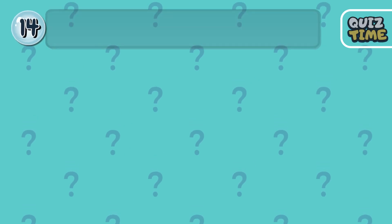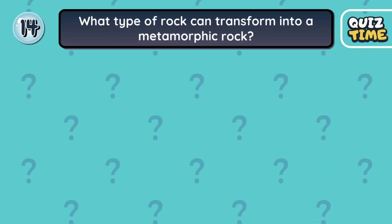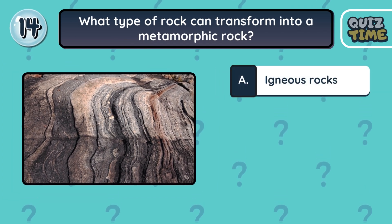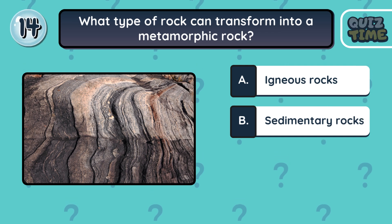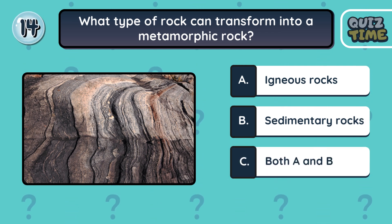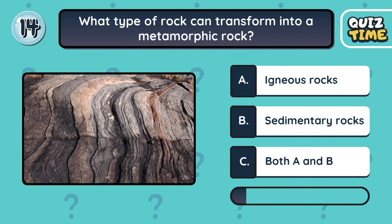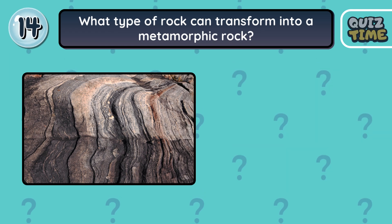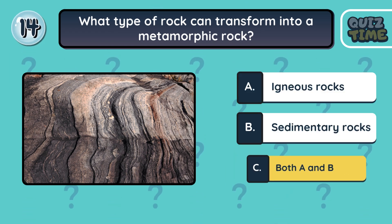Number 14. What type of rock can transform into a metamorphic rock? A. Igneous rock. B. Sedimentary rock. C. Both A and B. The correct answer is C. Both A and B.